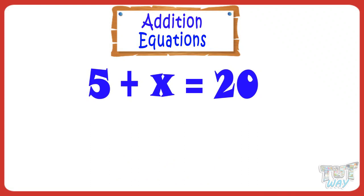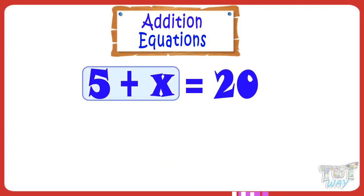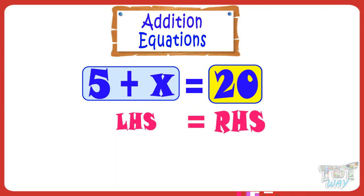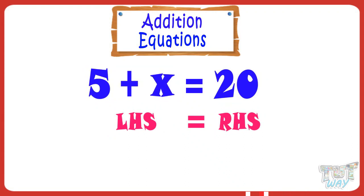So we have to find out the value of X. Here, 5 plus X is LHS — the left-hand side of the equation. 20 is RHS — the right-hand side of the equation. In any equation, the value of LHS must be equal to RHS; that is, 5 plus X must be equal to 20.